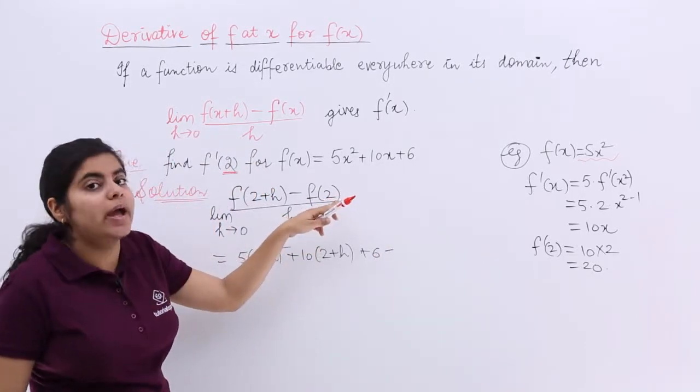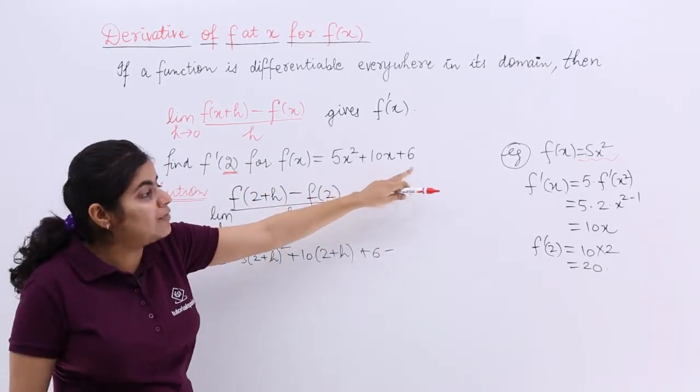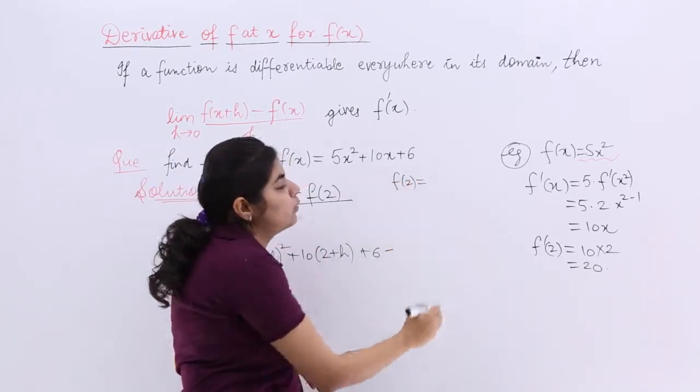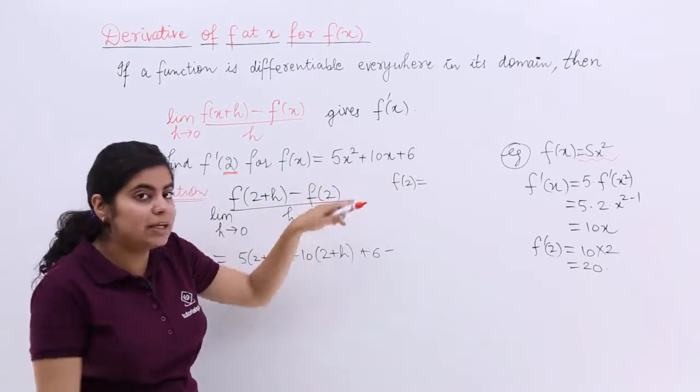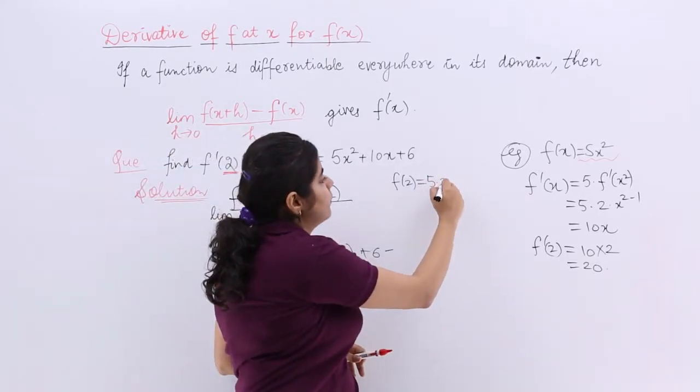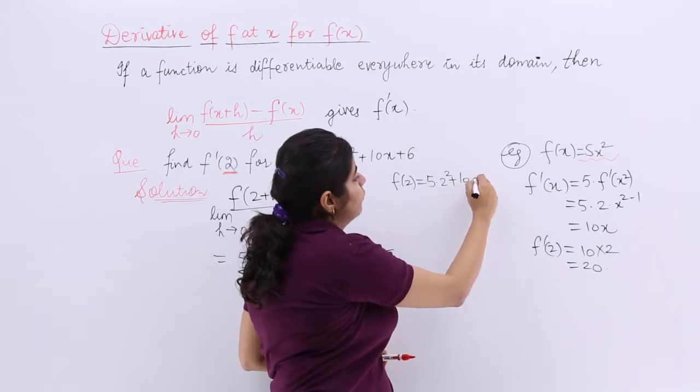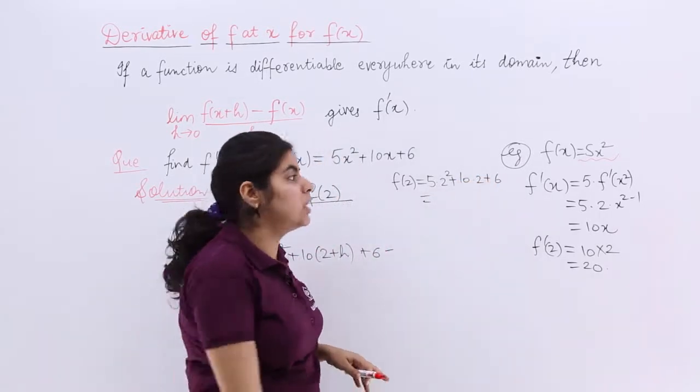f of 2 means wherever you have x you have to place 2 directly. Firstly only calculate f of 2. Let us calculate f of 2. 5 multiply by 2 square plus 10 multiply by 2 plus 6. What is the answer? Let us see.